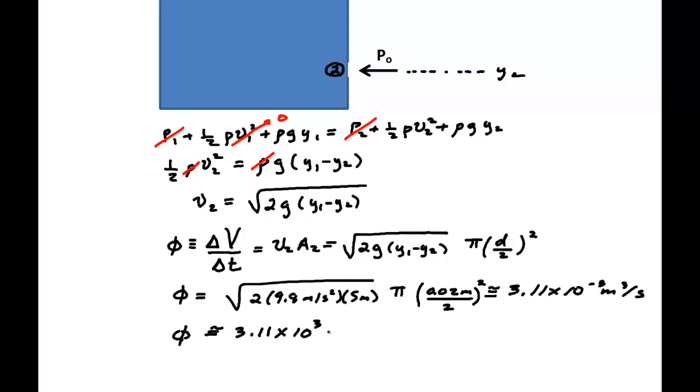So I went from 10 to the minus 3 to 10 to the third centimeter cubed per second. For liquids, a centimeter cubed is usually given as a milliliter. So that's 10 to the third milliliter per second. But I got a thousand milliliters. So that's a liter. So I have 3.11 liters per second.